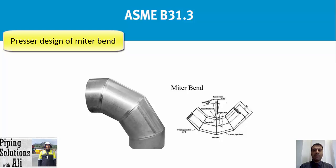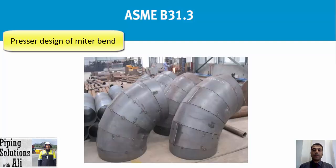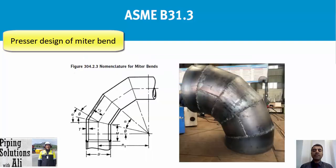A miter bend can be used to change the pipe direction. It is made up by fabricating a number of pipe piece segments. However, using this fabricated fitting is not popular in process piping designed based on ASME B31.3. You may have heard that it's not allowed to use miter bends in process piping, or that we are only allowed to use them in utility services.